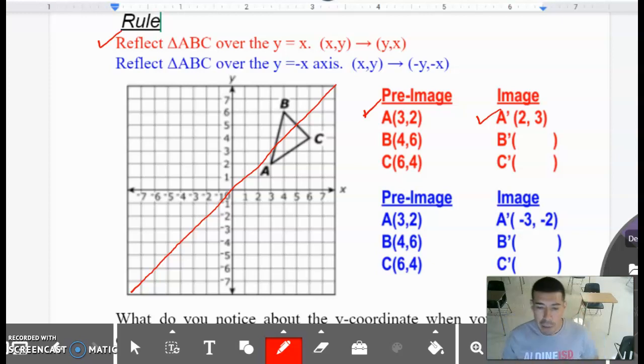For this one, I recommend that you write the coordinates on a piece of paper, reflect them, and then answer the question. And that's exactly what I'm gonna do. So B is four comma six, so new B you simply flip them, six comma four. New C is six comma four, so new C will be four comma six.